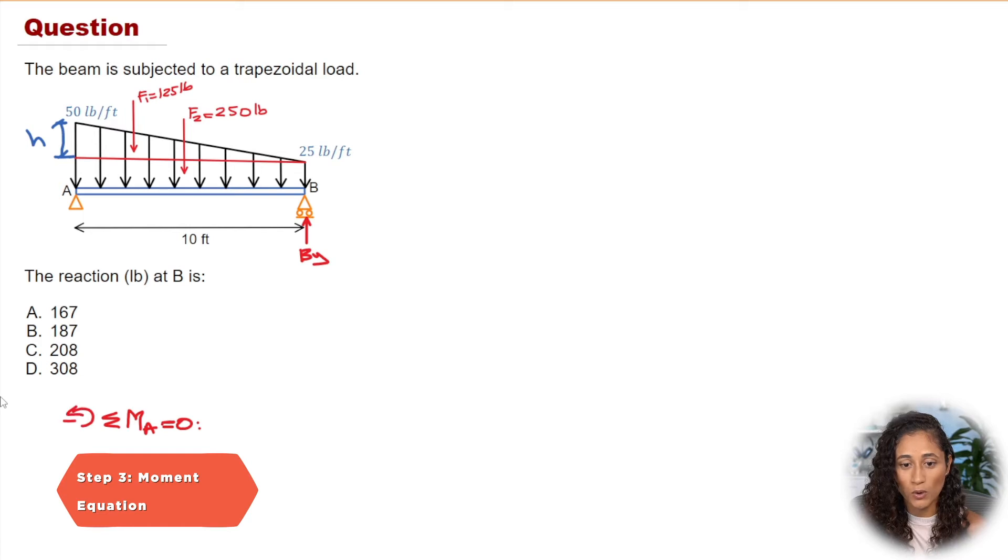So I'm gonna assume that counterclockwise is the positive direction for the moment, and I'm also going to assume that By is going up. Now if we get a positive answer that means our assumption is correct, but if we get a negative answer that just means our assumption was wrong and that By should be going down.